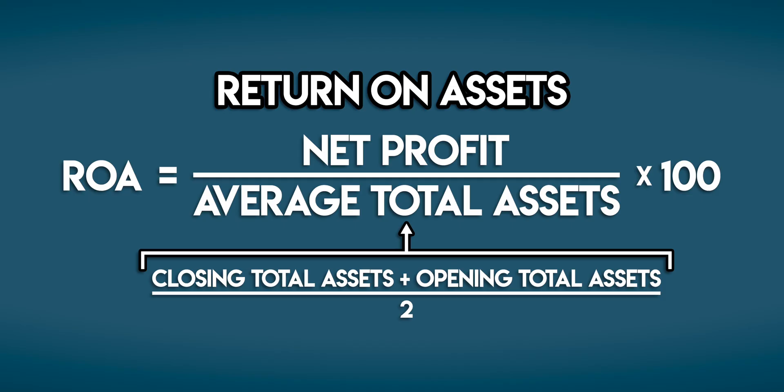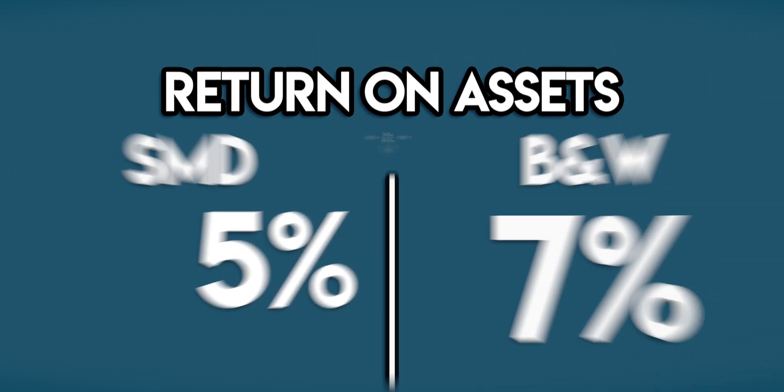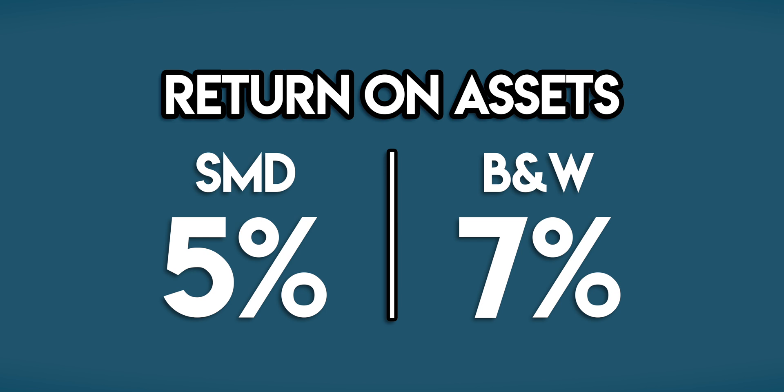But what does this mean? Why is return on assets important? From an investor's point of view, it's great for making comparisons. ROA tells us how efficiently a business used its assets to generate profit. We can compare the ROA from different businesses in similar industries. For example, SMD Contractors have an ROA of 5%, but a rival construction company had an ROA of 7% for the same period — B and W were able to generate 2 extra cents of net profit from each dollar of assets they own. The bigger, the better.